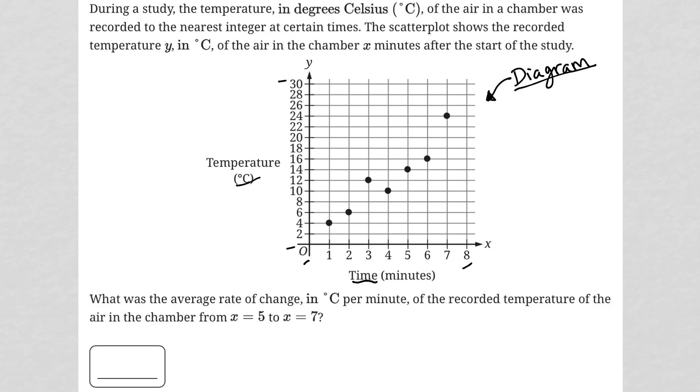So the question says, during a study, the temperature in degrees Celsius of the air in a chamber was recorded to the nearest integer at certain times. The scatterplot shows the recorded temperature y in degrees Celsius of the air in the chamber x minutes after the start of the study.